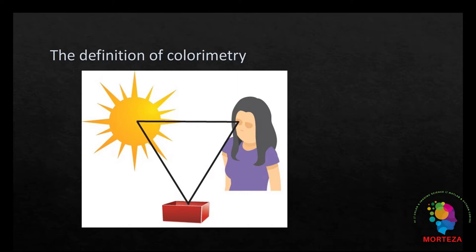Those factors are light sources, which is represented by this sun here, objects, and human visual system. So the colorimetry science in order to quantify the color has made an attempt to quantify all these three factors. This system was first established in 1931 by the CIE which stands for the International Commission on Illumination.